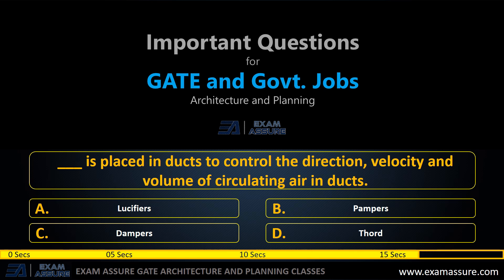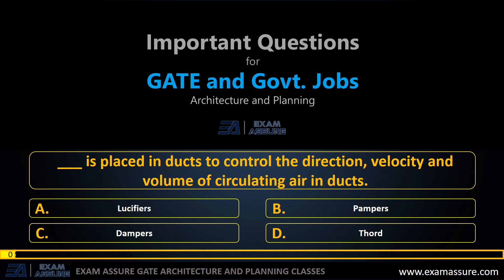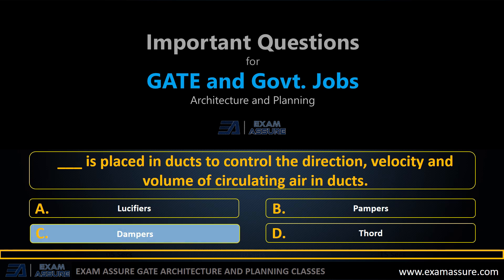Next question: What is placed in ducts to control the direction, velocity, and volume of circulating air? Option A: lucifiers, option B: pampers, option C: dampers, option D: thawed. The correct answer is option C, dampers.